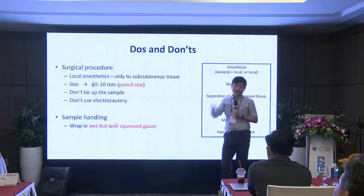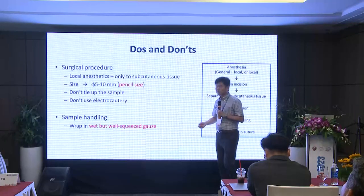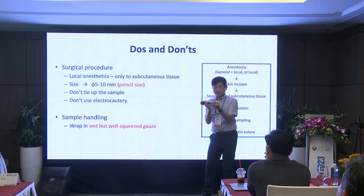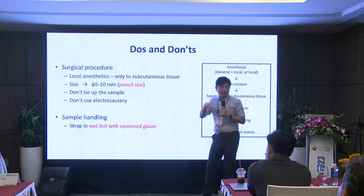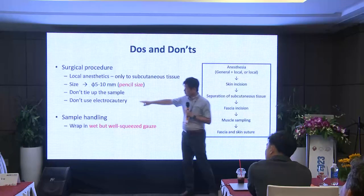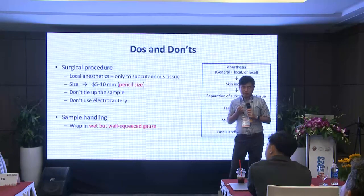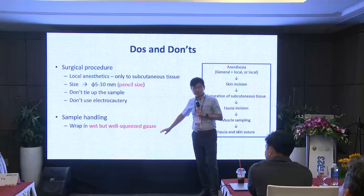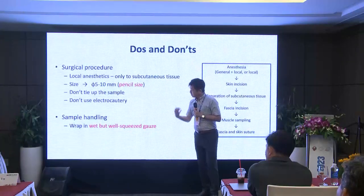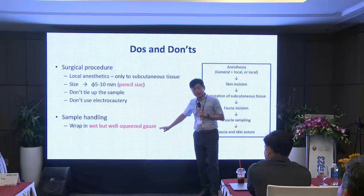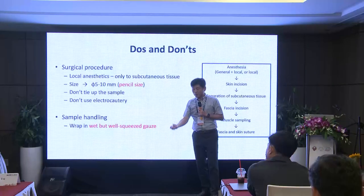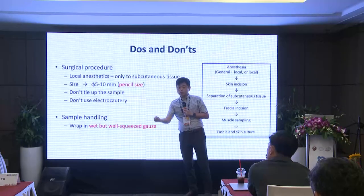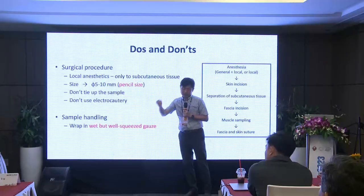Don't tie up the sample. If you ask a surgeon with no experience in muscle biopsy, sometimes they take the sample just as they would a vessel — they tie it up, and of course you destroy the entire structure. You shouldn't do that. And don't use electrocautery on the sample before it is removed. After taking out the sample, the sample should not be dry — wrap it in wet gauze. But the wetness is key: if it is very wet, the sample will absorb water and you'll get a lot of freezing artifacts. So the gauze has to be well squeezed until the water does not come out, then wrap the sample.